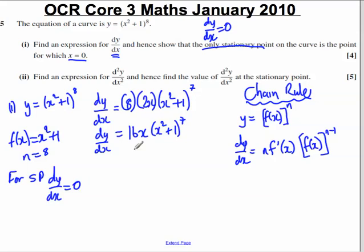So therefore, we've got this expression here, 16x times x squared plus 1 to the 7, is equal to 0. Let's just have a think about this.